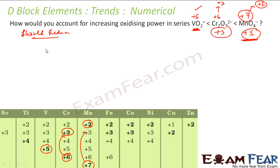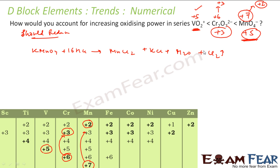For MnO4−, consider the reaction: KMnO4 reacts with HCl (sulfuric acid medium) to give MnCl2, KCl, water, and chlorine gas. In this balanced reaction, Mn goes from plus 7 to plus 2 — a change of 5 oxidation numbers — making it a strong oxidizing agent.